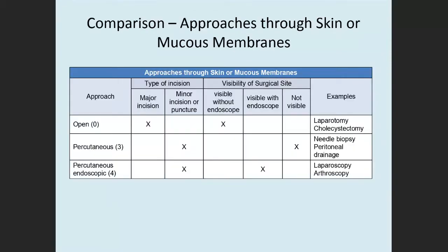Let's compare the approaches through skin or mucous membranes. Open involves a major incision, while percutaneous and percutaneous endoscopic are minor. With the open approach, you don't need an endoscope because the large incision gives direct visualization. With percutaneous, you can't see the site at all. Percutaneous endoscopic gives visibility only via the endoscope.